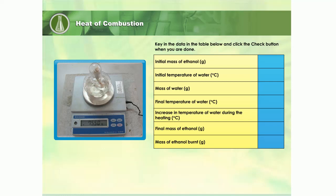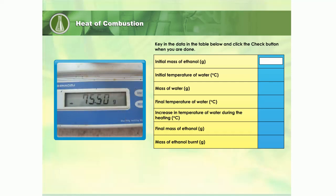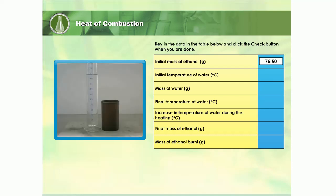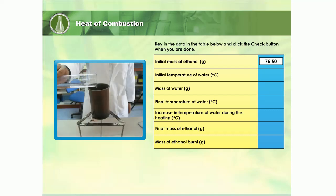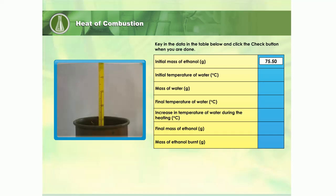The burner containing ethanol is weighed on the digital electronic balance. Record its mass in the table provided. A copper can filled with 200 cubic centimeters of water is placed on the clay pipe triangle. A thermometer is then placed in the water. Record the initial temperature of the water and the mass of water in the table.